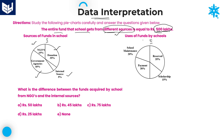Coming to the second pie chart, it is about uses of funds by the school — whatever fund is received from various resources and how that entire fund is used by the school. Reserve is 35%, scholarship is 15%, payment is 30%, and school maintenance is 20%. This is the complete information regarding the two pie charts.